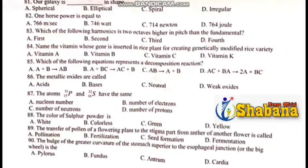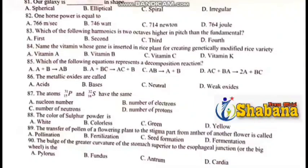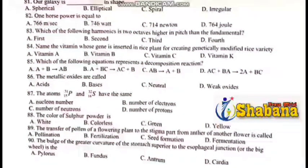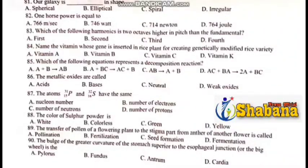Question number 89: The transfer of pollen of a flowering plant to the stigma part — from anther to another flower — is called pollination. The anther is the male part of the flower. The stigma is the female part. The green color is the same — the pollen will follow the two. The gen Davina — the consummation is the same.